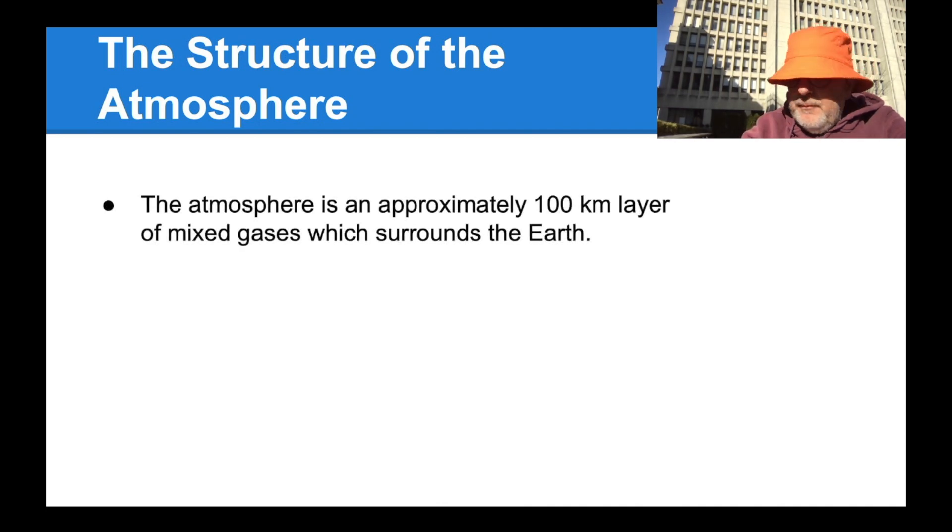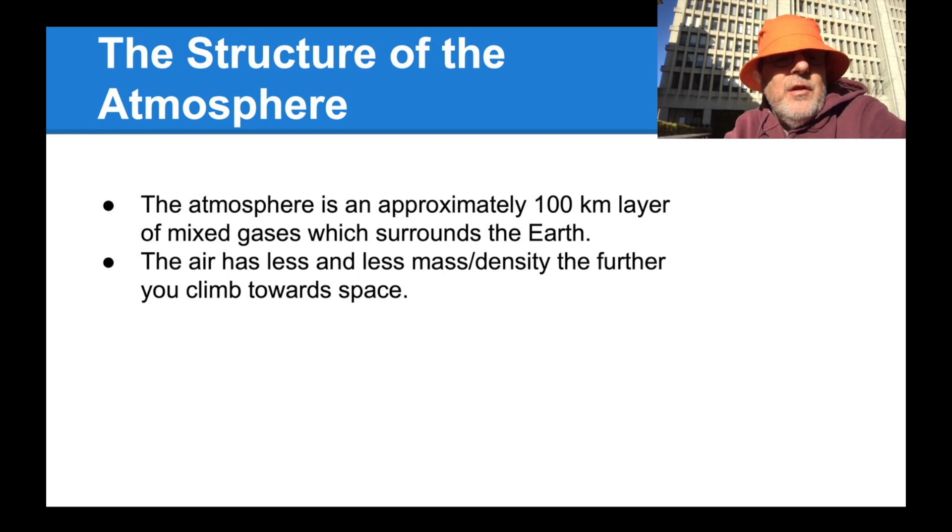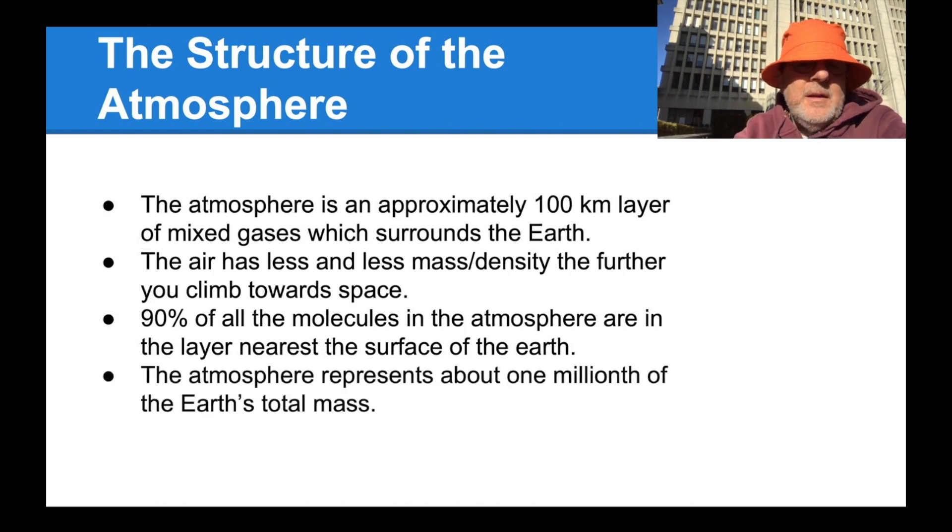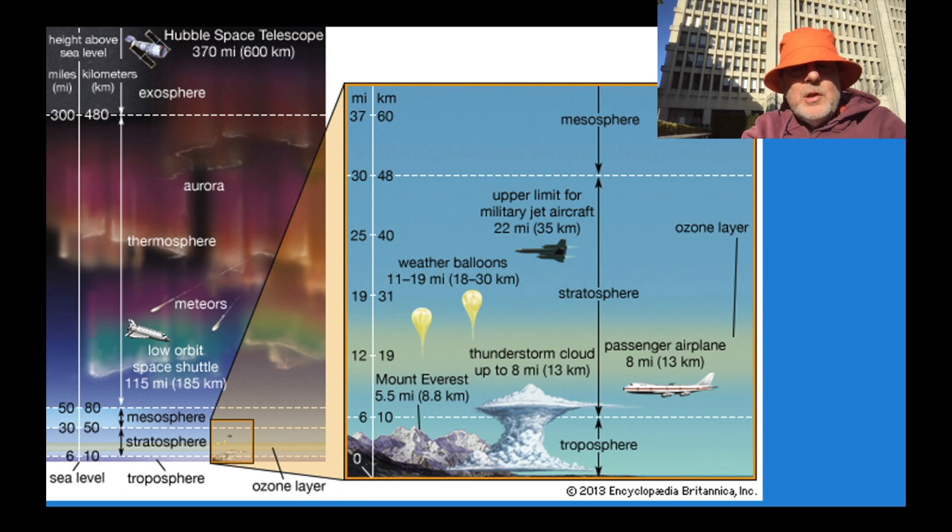So the structure of the atmosphere. The atmosphere is an approximately 100 kilometer layer of mixed gases which surround the Earth. The air has less and less mass density the further you climb towards space. Ninety percent of all the molecules in the atmosphere are in the layer nearest the Earth. The atmosphere represents about one millionth of the Earth's total mass. So it's insignificant in terms of mass. This would be what it would look like in terms of the layers of the atmosphere. We have the troposphere, which is the lowest layer, then going up to the stratosphere, then the mesosphere, then the thermosphere, and finally the exosphere. And you can see what we might find in the troposphere would be water vapor to the lower stratosphere, then an ozone layer, which keeps us safe from ultraviolet radiation. And then things that we do up in the upper stratosphere with jets, weather balloons, and finally space for our upper thermosphere and exosphere.